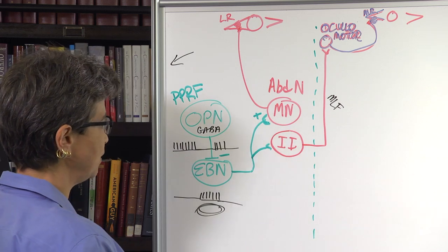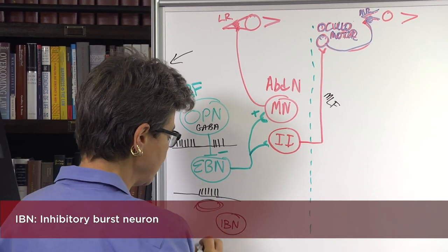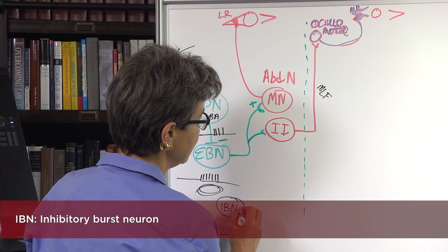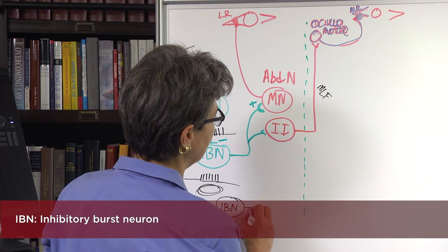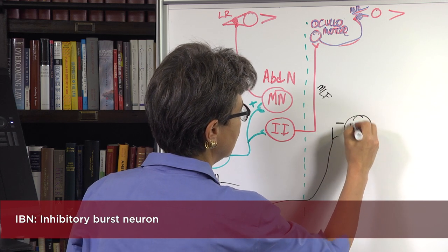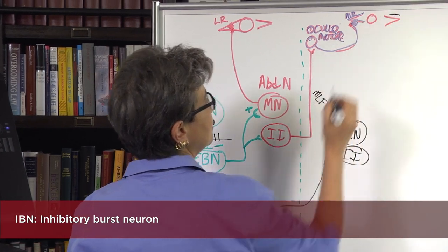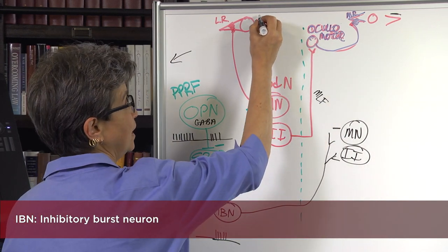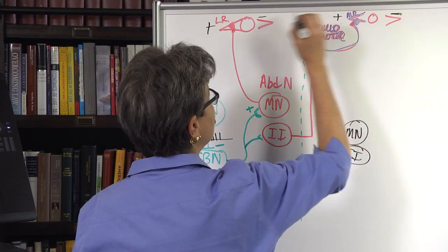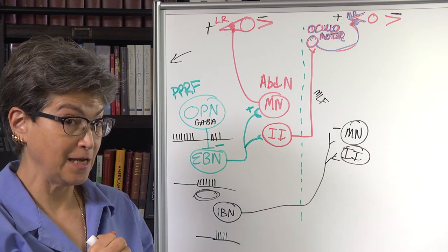There's also an inhibitory burst neuron, which also gets disinhibited when the omnipause neuron pauses. In this case, it crosses the midline to inhibit both the motor neuron and the internuclear interneuron on the opposite side. That leads to inhibition of the contralateral lateral rectus and the ipsilateral medial rectus. So there's excitation of two muscles and inhibition of the other two, and you get a leftward saccade.